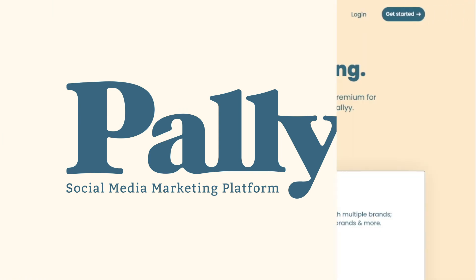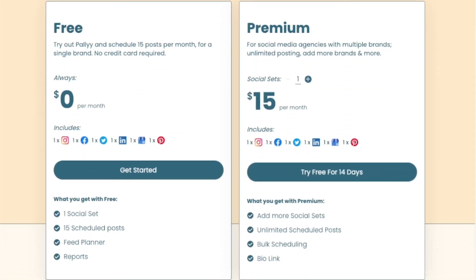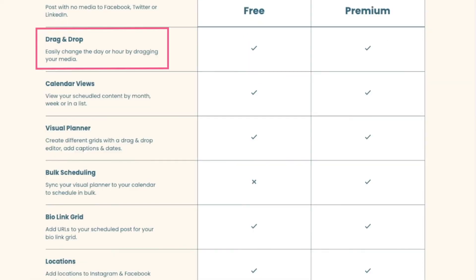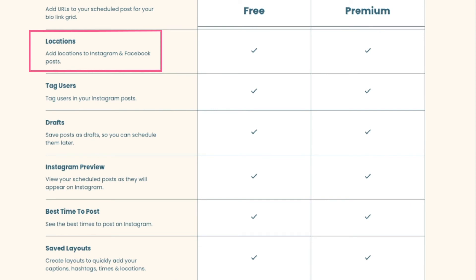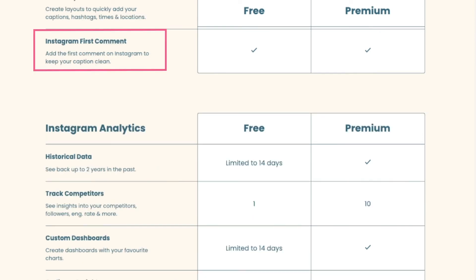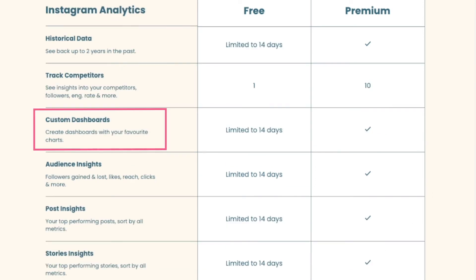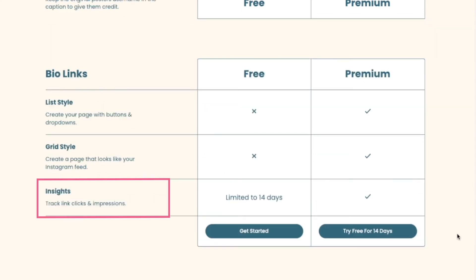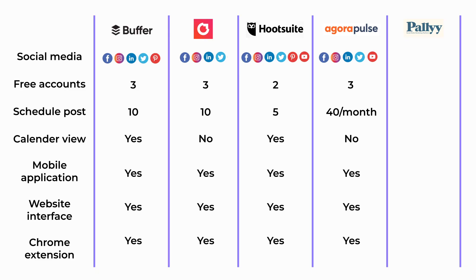The last tool is Paraly, which provides a vast number of features. You can schedule images, videos, and text-only posts. You get drag-and-drop, calendar view, visual planner, adding location to Instagram and Facebook posts, tagging another user on Instagram, preview, adding the first comment on Instagram, 14-day analytics, custom dashboard, audience posts, stories insight, bio link tracking, and more. It provides one social set consisting of five social profiles. Paraly supports six platforms: Facebook, Instagram, Twitter, LinkedIn, Pinterest, and even Google My Business. The reason it's last on our list is the scheduled post limit — just 15 per month, which we consider too low. However, if this limit doesn't bother you, you should use this tool because there are features that even Buffer doesn't provide.